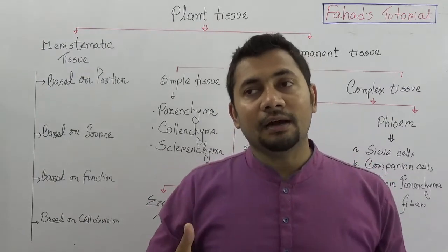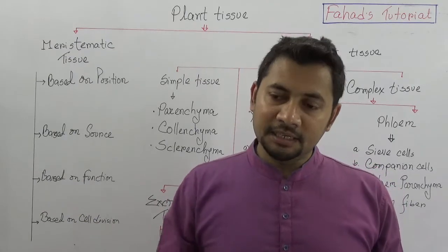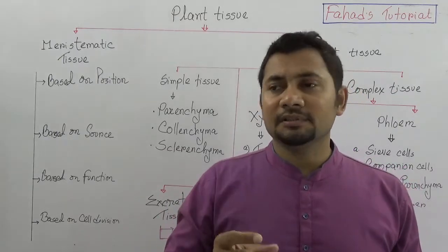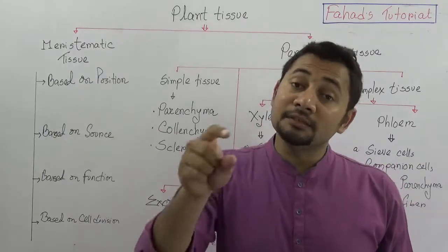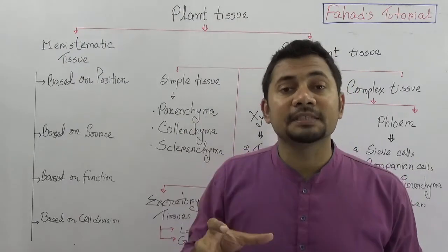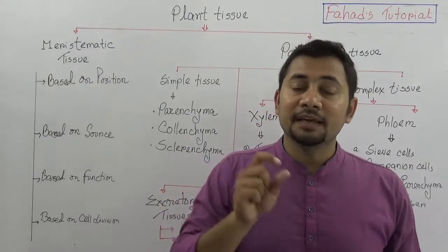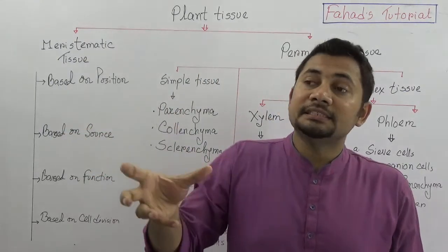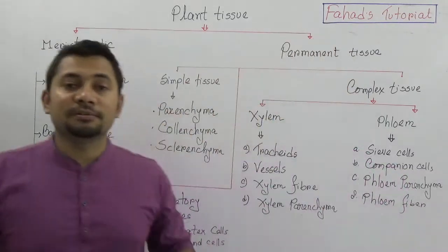We need to understand how organ systems are developed and how they perform. In the case of unicellular organisms, metabolic processes and functions like growth, reproduction, digestion, and excretion are done in one cell. But in the case of multicellular organisms, there is a group of cells which has different and individualized activity, performed by a group or bunch of cells called tissues.